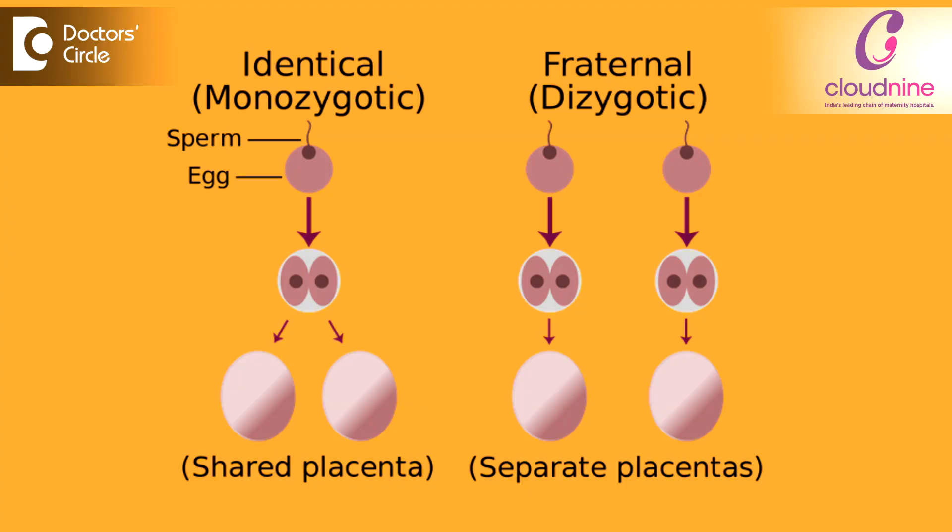In twin pregnancy, there are two types: one is dizygotic twins and the other is monozygotic twins. Zygosity refers to the number of eggs from which the baby is formed.